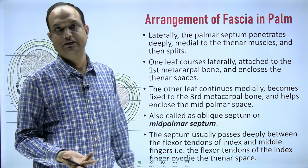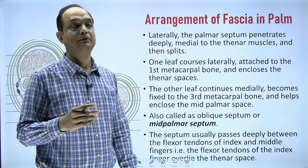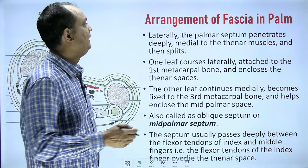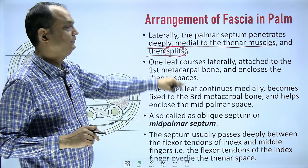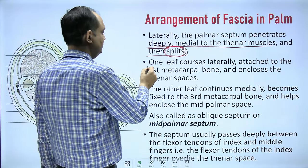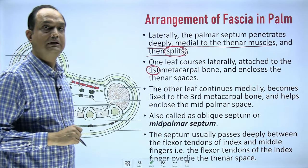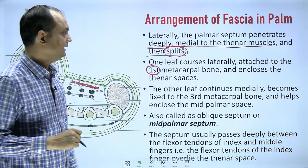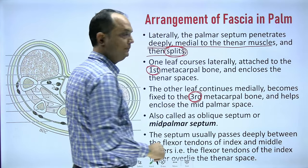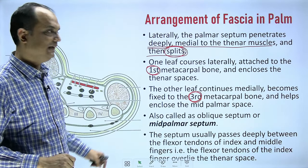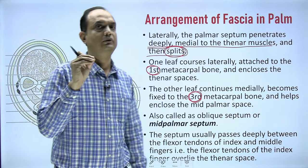Similarly, on the lateral aspect, the lateral border of the palmar aponeurosis also gives a septa. Medial to the thenar muscles, this septa splits: one leaf goes laterally and attaches to the first metacarpal, enclosing the thenar area, while the other leaf continues medially and attaches to the third metacarpal, enclosing the mid palmar space.